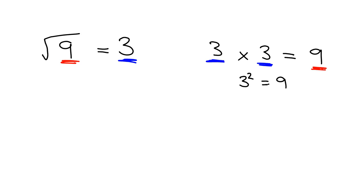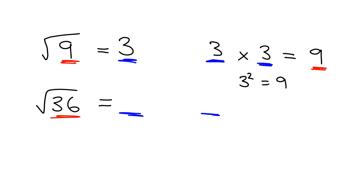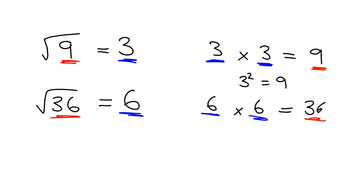So when I'm asked for a square root, I'm asking what, multiplied by itself, will give me that answer. For example, what's the square root of 36? What I'm asking you to find is what, multiplied by itself, will give you 36 as the answer. This is where you need to know your times tables really well, and hopefully you do — 6 times 6 is 36, so the square root of 36 is just 6.